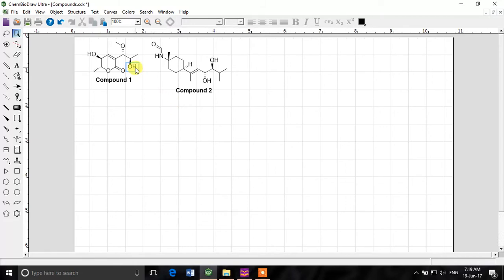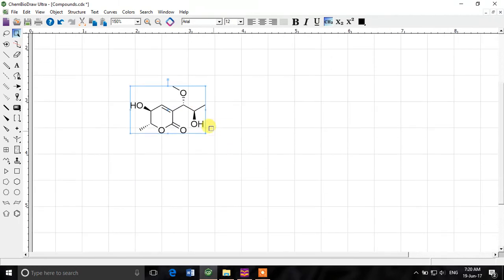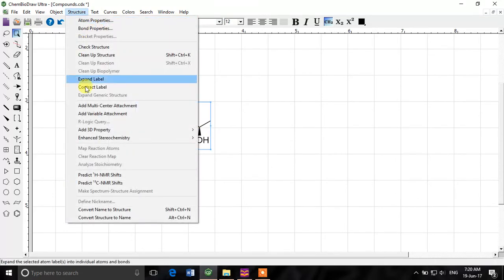So first of all I want to predict the NMR of this compound for example. I'm just making a copy to keep the original ones isolated. This is a compound for which we want to get the NMR data. We can predict both hydrogen NMR and the carbon-13 NMR for this. We'll select the compound, go to structure and go to predict hydrogen NMR shifts.